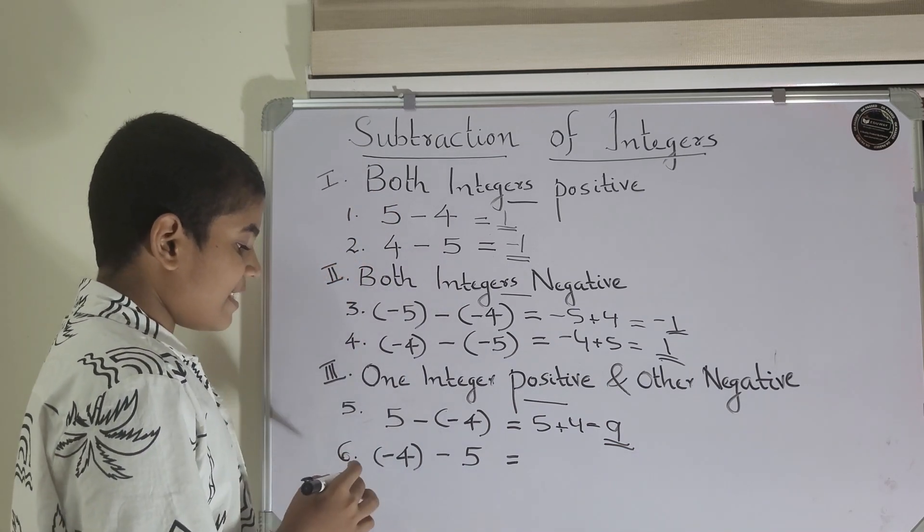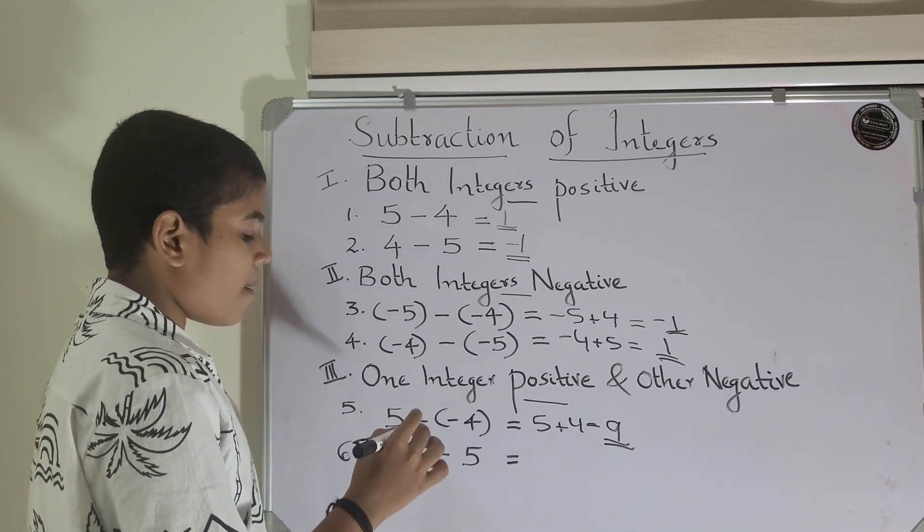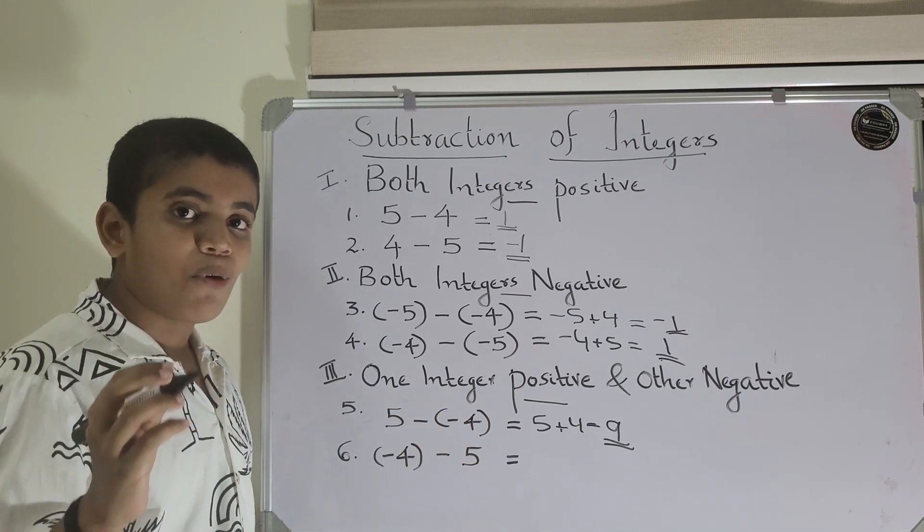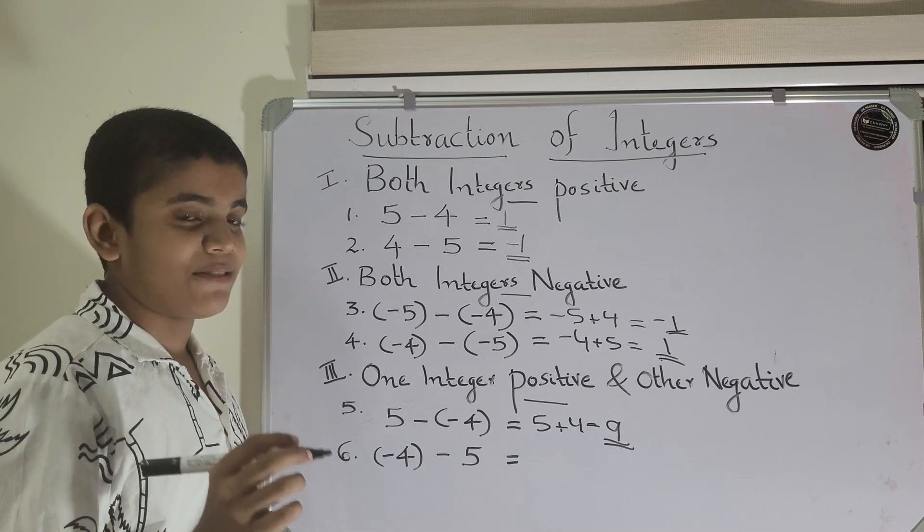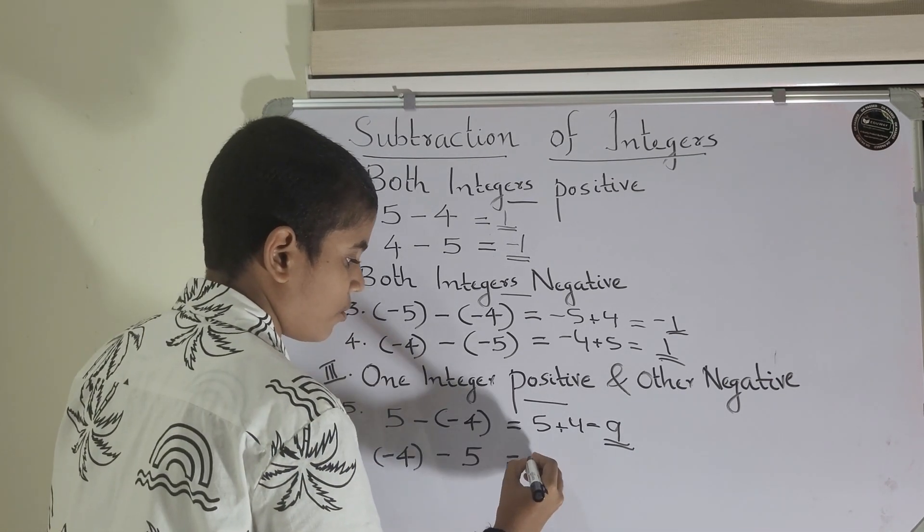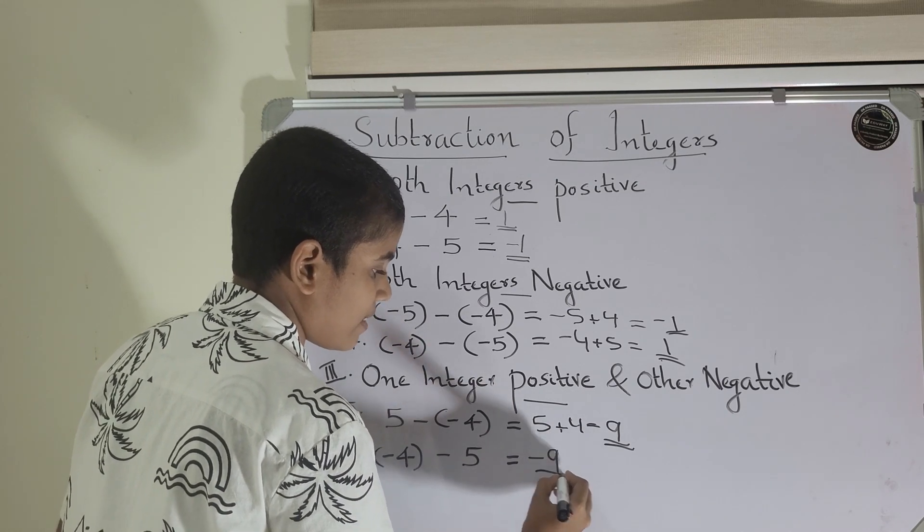Next, in the last case, it is minus 4 minus 5. Here, you need to add both numbers and put the negative sign. So, 5 plus 4 equals 9. My answer is minus 9.